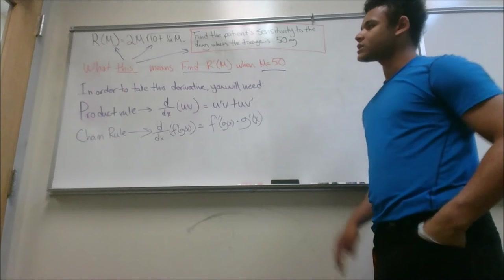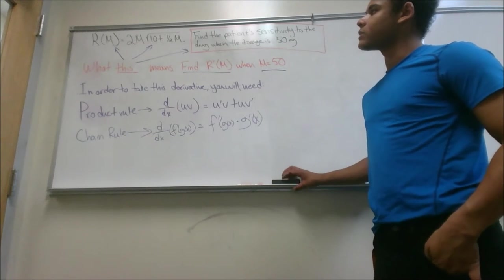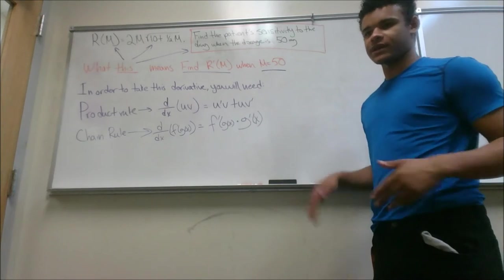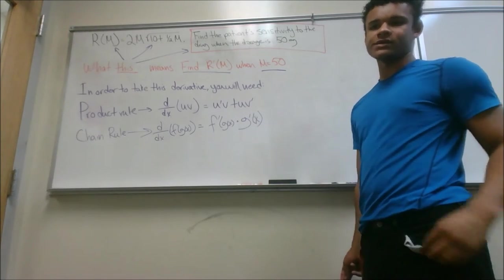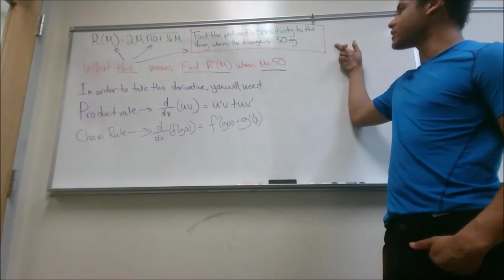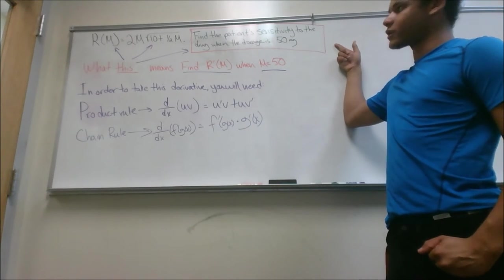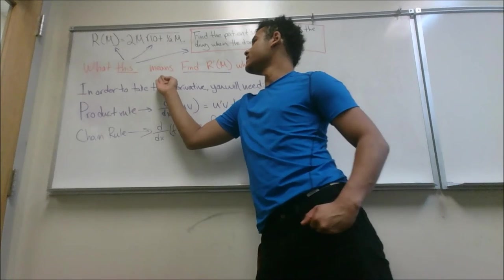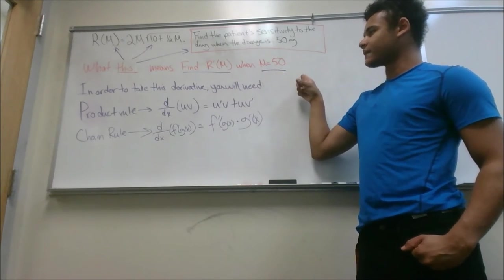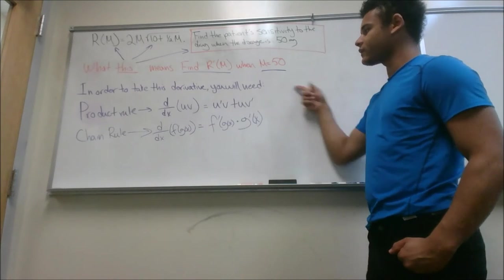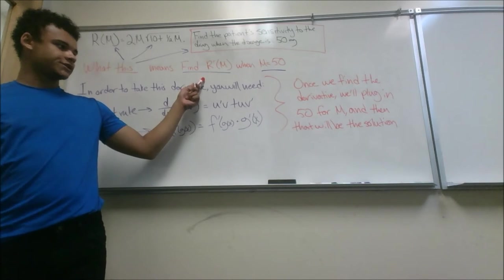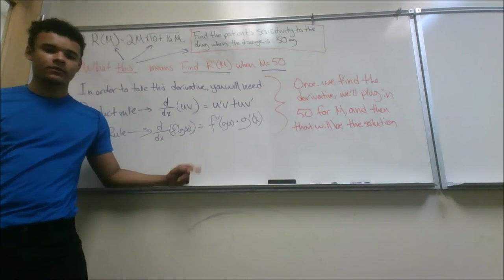So, the equation we're given is R of M equals 2M times the square root of 10 plus 1 half M. That's the equation for the strength of our particular drug. It wants us to find the patient sensitivity to the drug when the dosage is 50 milligrams. Basically, this means we need to find the derivative of R of M when M equals 50. To take this derivative, you'll need the product rule and the chain rule. Once we find the derivative, all we have to do is plug in 50 for M and we'll be done.